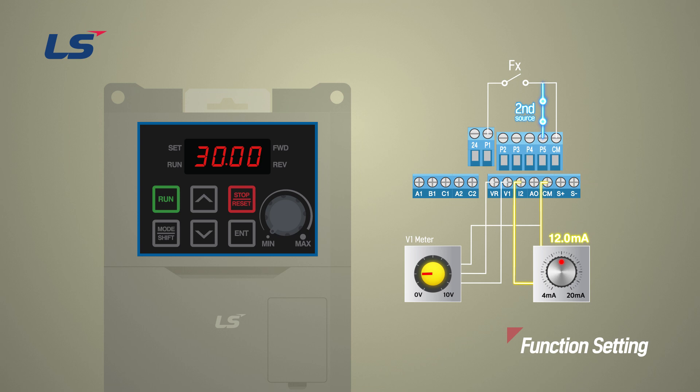The second operation state is operated by terminal block command source and 4 to 20 milliampere frequency command. The operating frequency varies according to the 4 to 20 milliampere current command.